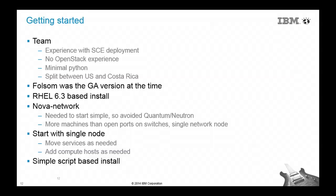We were looking to gain experience around OpenStack. Our team had basically zero knowledge about OpenStack, but we had experience with SCE and minimal Python experience. Our team was split between the U.S. and Costa Rica. When we began, we started with Folsom — that was the GA version at the time — and installed our OpenStack on top of RHEL 6.3. We didn't have a lot of open switches in our racks, so we started with a single network node, knowing we would scale out and move things around eventually.